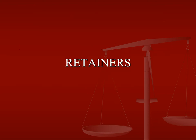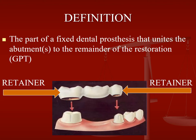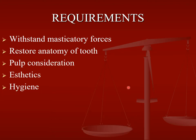Coming first to the retainer. The definition of a retainer, according to the Glossary of Prosthodontic Terms (GPT), is a part of a fixed dental prosthesis that unites the abutments to the remainder of the restoration. In the photo you can see a bridge as a whole — there is a retainer, in the middle is a connector, this is a pontic, and these are the abutments.